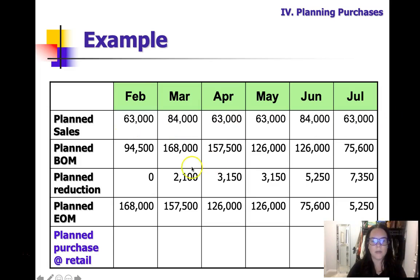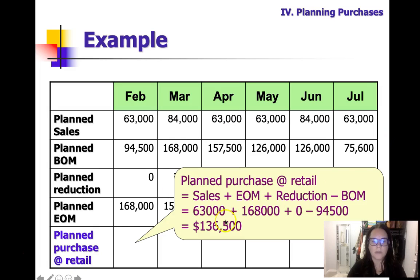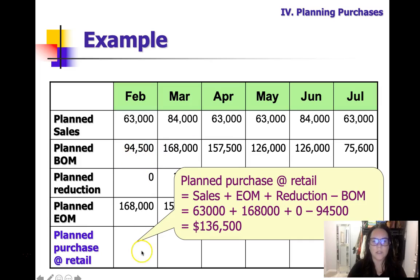If we have our plan sales, plan BOM, plan reductions, plan EOM, and then our plan purchase at retail — let's do February. February would be $63,000 plus $168,000 plus zero, because we don't have any reductions, and then we subtract out our BOM of $94,500, which gives us planned purchases at retail of $136,500.